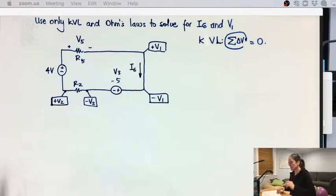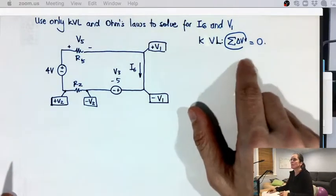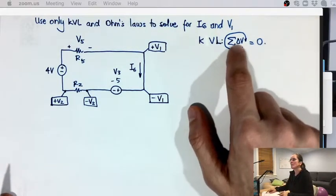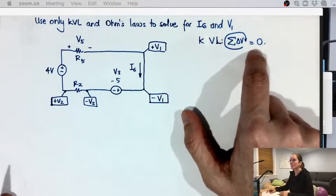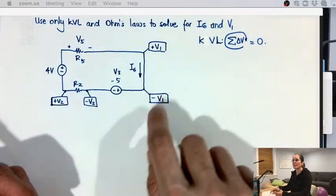We just learned KCL and KVL, and I told you the sum of all voltage drops around a loop going clockwise direction is zero, and I'm going to use that here.